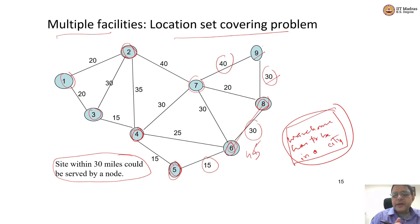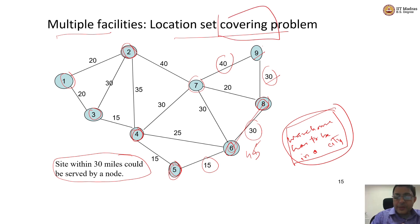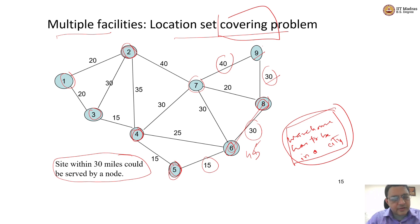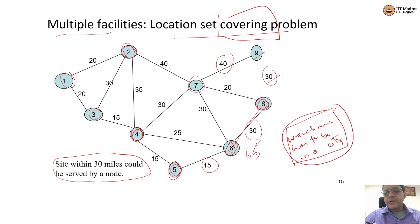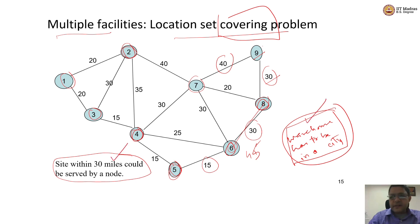We need to decide how many facilities will be required so that the entire network of markets is covered — which is why I said covering problem. How many such facilities will be required and where should they be located? The set covering problem in the context of facility location always has a trivial answer. The trivial answer is: have nine warehouses — have a warehouse in each city. That will meet the condition, no problem.